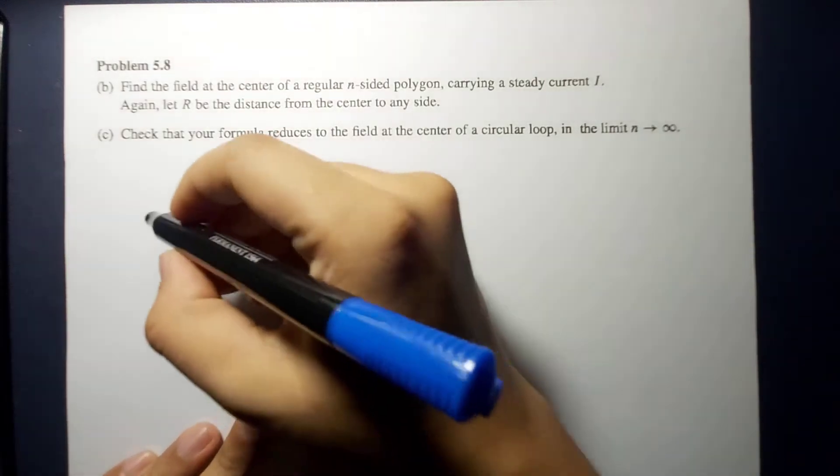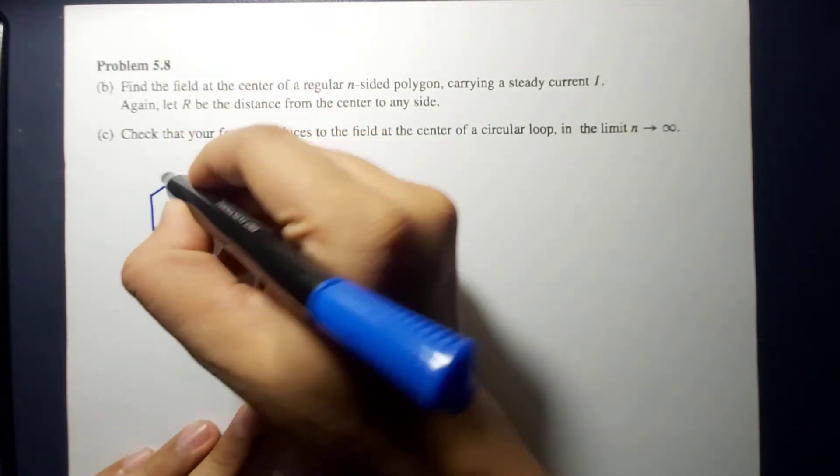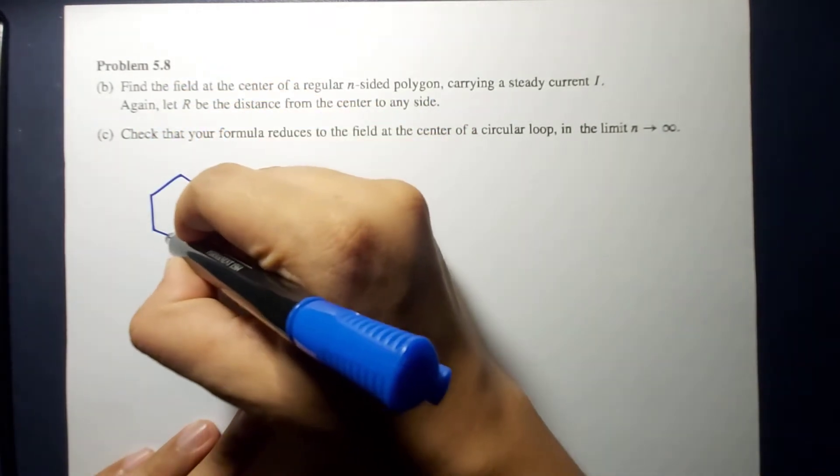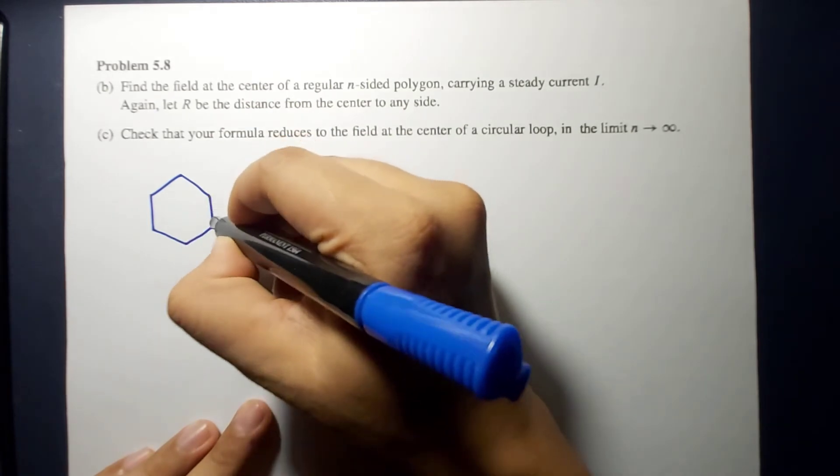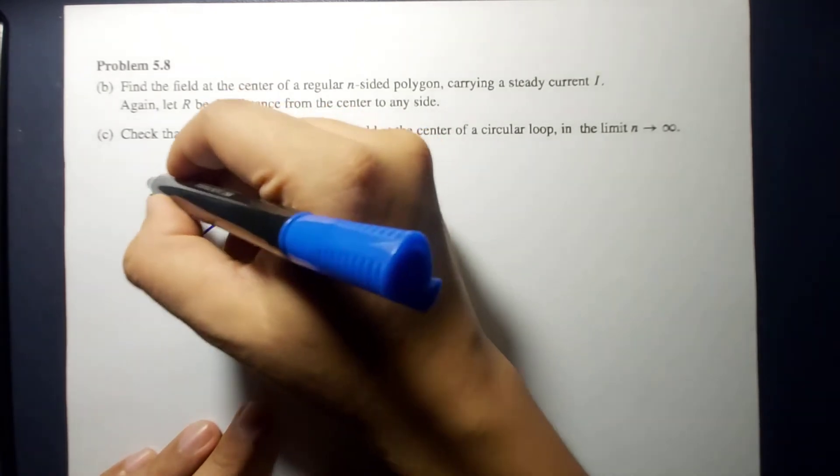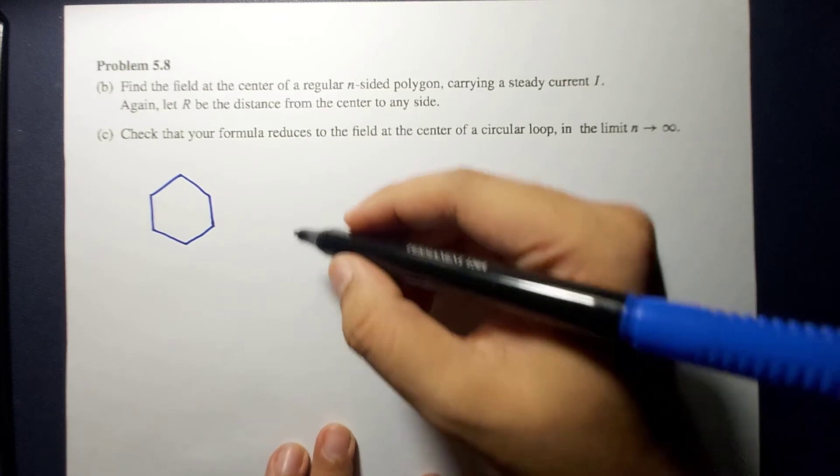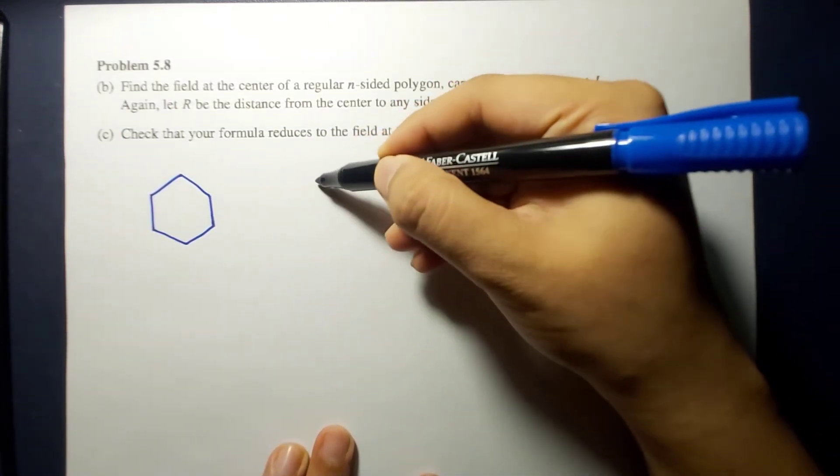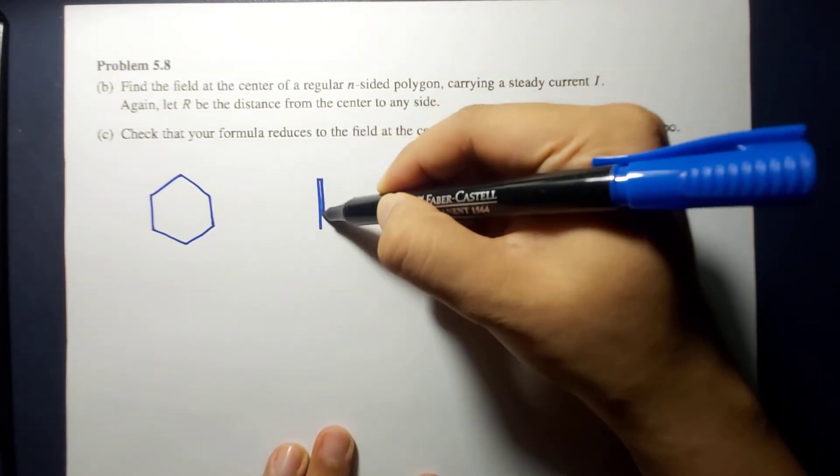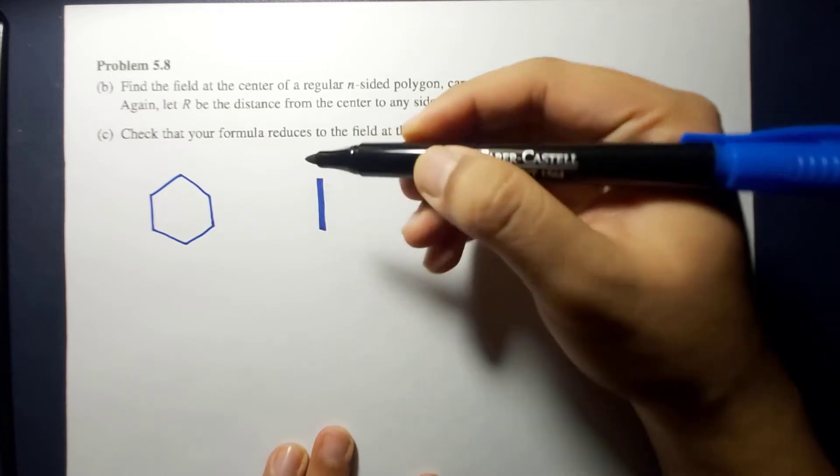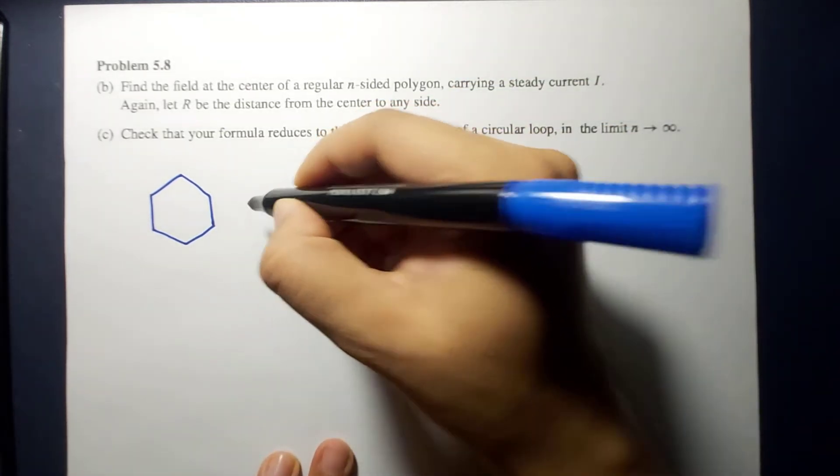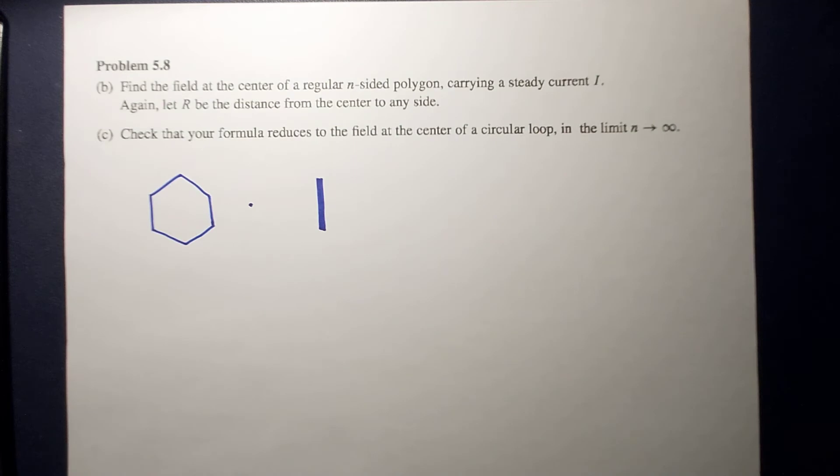So a hexagon has six sides like this. So these sides correspond one segment. Let's say we choose one segment. So this line segment is R away from the center.